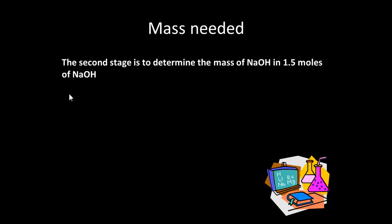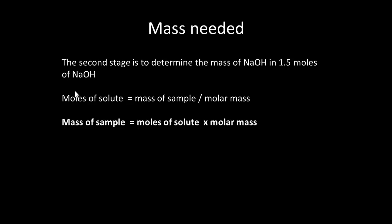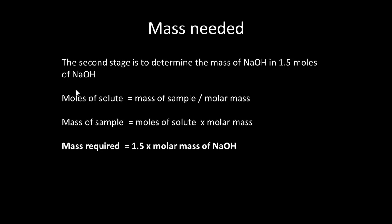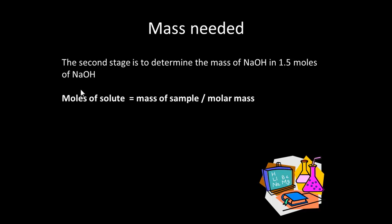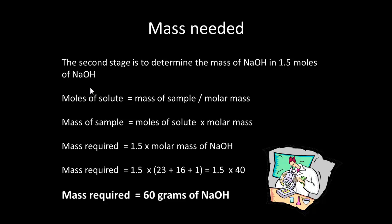We need to convert 1.5 moles of sodium hydroxide into a mass we can measure out. Moles of solute equals mass divided by molar mass, so mass equals moles times molar mass. The molar mass of NaOH is 23 plus 16 plus 1, which equals 40 g/mol. So the mass required is 1.5 times 40, which equals 60 grams of sodium hydroxide.